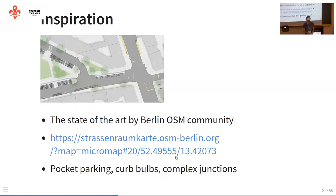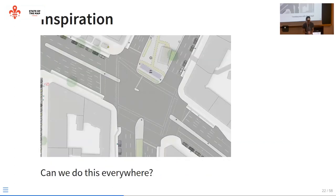I know it's possible to do better because a little over a year ago, the Berlin OSM community — I think this was done by Alex and Tobias Jordans — produced a map that if you haven't seen, you should check out. It was personally the coolest map I've ever seen. It has an incredible level of detail — even pocket parking, parking that exists only on one part of the street, curb bulbs to make it easier for pedestrians to cross big intersections. This level of detail is exactly what I want to do, but I want to do it everywhere, based on OSM data.